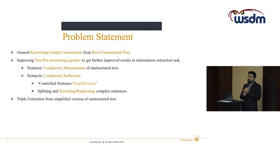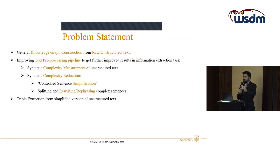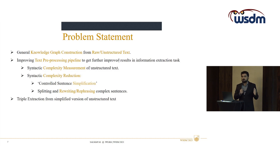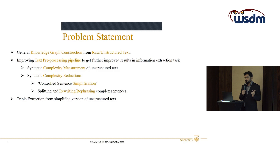This is the motivation and problem statement of our domain: we are developing a knowledge graph from unstructured text. But as established by the previous presenters, there are errors while constructing these knowledge graphs — there will be ambiguity for complex sentences. We are trying to handle the root cause of these errors, which in our opinion is that the input text is complex. We need to reduce that complexity syntactically.